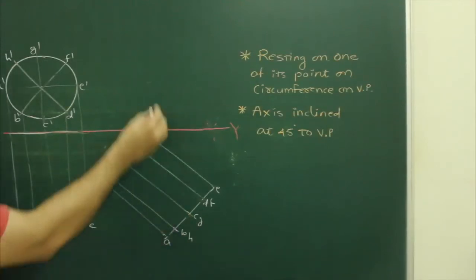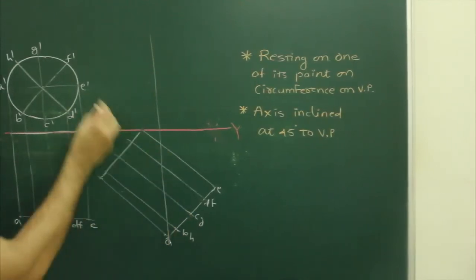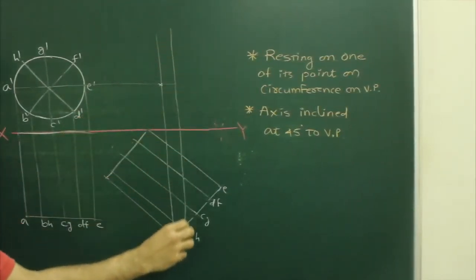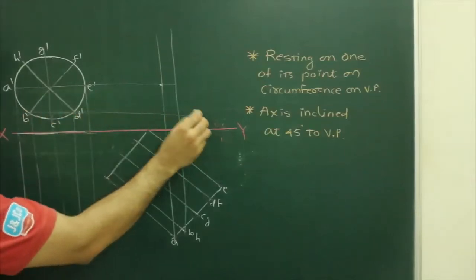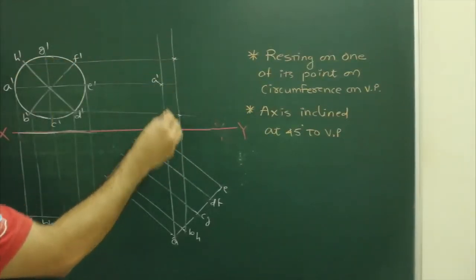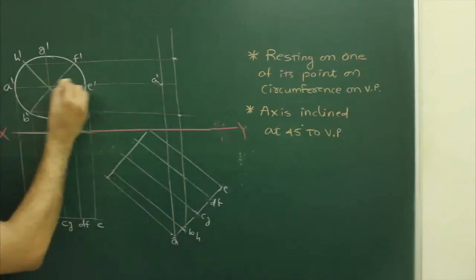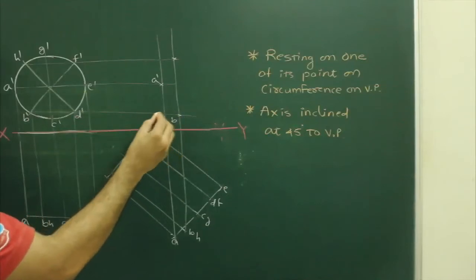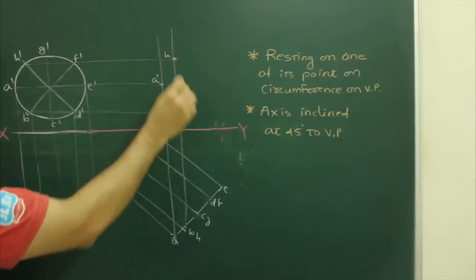Then you project A from here and A dash from here. Same way, B and H from here. So see, you got A dash, A from here, A dash from here, B from here, B dash from here, H dash from here, H from here.